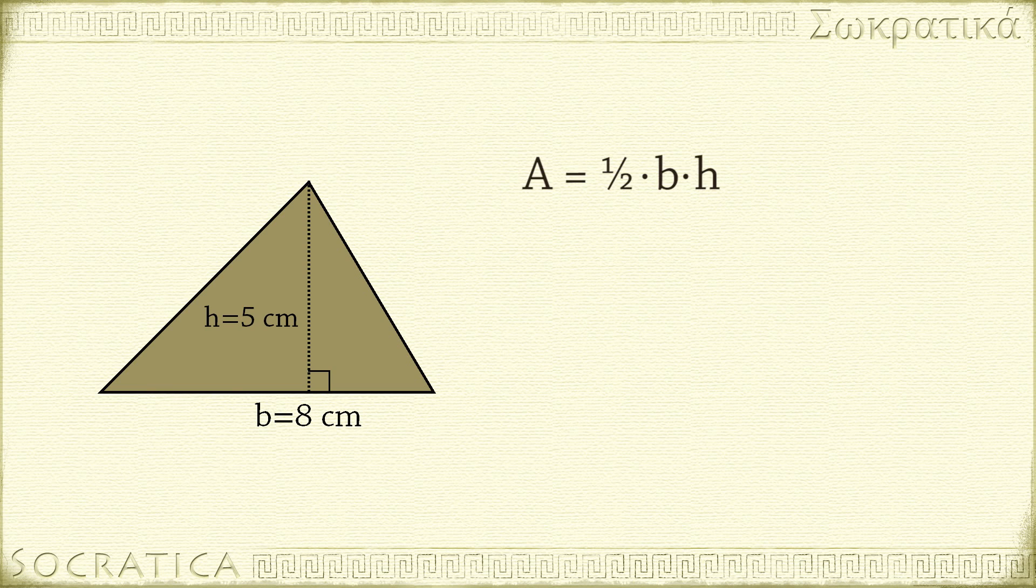Using the formula, the area of the triangle is one half times 8 cm times 5 cm. We simplify this by multiplying the numbers together and then multiplying the units together.